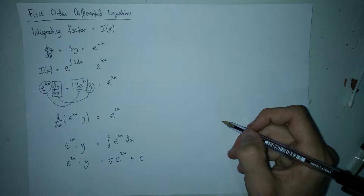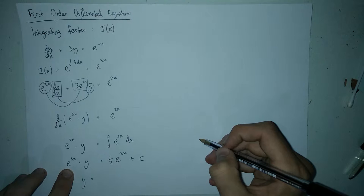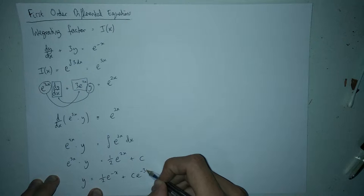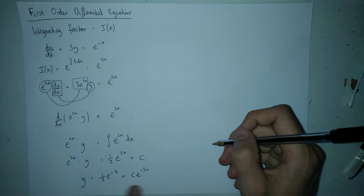When we integrate e to the two x we just divide by two and add the constant c. We should probably write it so that y equals something, as is customary. So we divide by e to the three x, or equivalently multiply by e to the minus three x. We get y equals e to the two x over two times e to the minus three x, plus c times e to the minus three x. That is the solution to this particular first order differential equation.